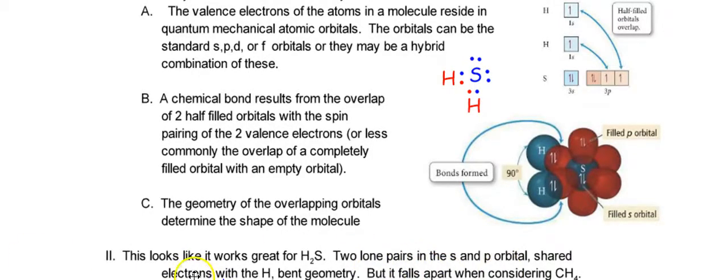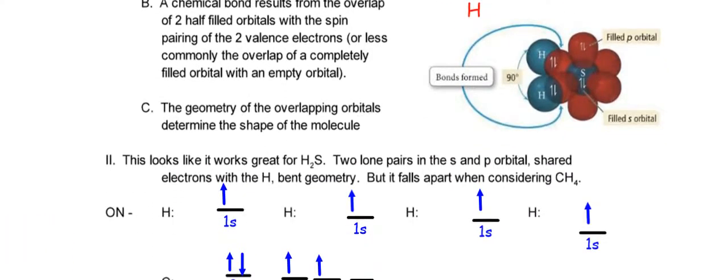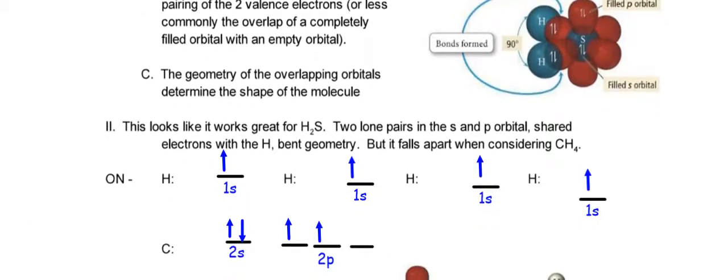It falls apart when considering methane, CH4. Okay, so right now, let me scroll down. So this is what's happening with methane, right? I have four hydrogens with single arrows going up, and I have carbon with its valence electrons of 2s2, 2p2. So if I'm looking just at this, it looks like I can only have two electrons. So it looks like my formula would be CH2, all right? But that's not what it is. We know better than that. We know it's CH4. So this model is not enough.